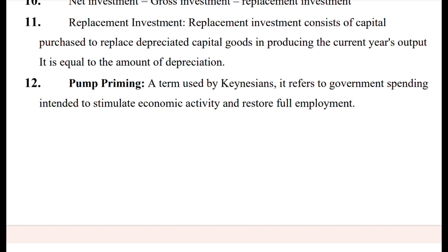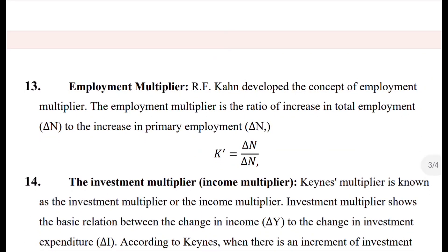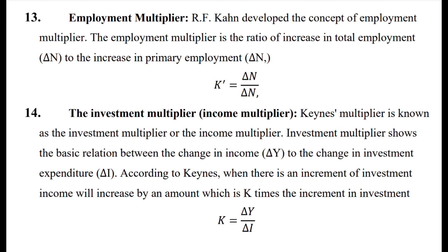Pump priming is a term used by Keynes. It refers to government spending intended to stimulate economic activity and restore full employment. The employment multiplier is the ratio of the increase in total employment to the increase in primary employment — that is, change in total employment divided by change in primary employment.